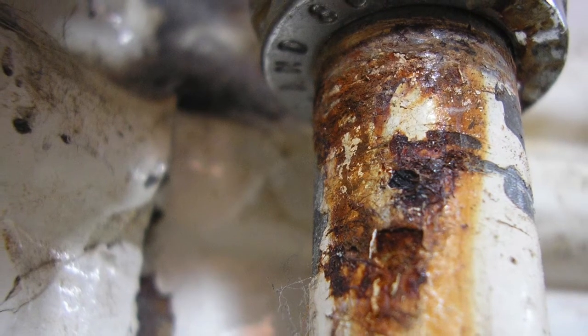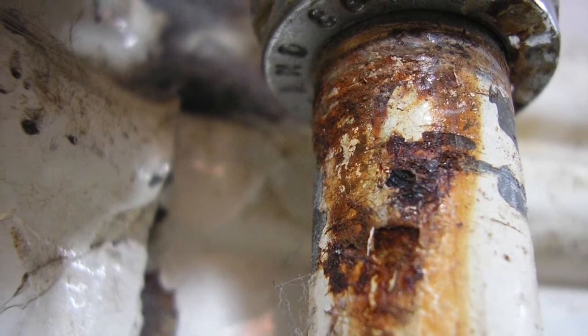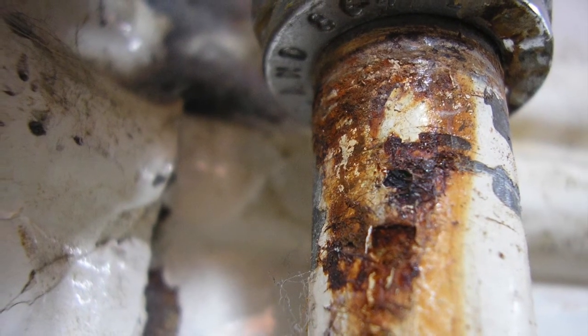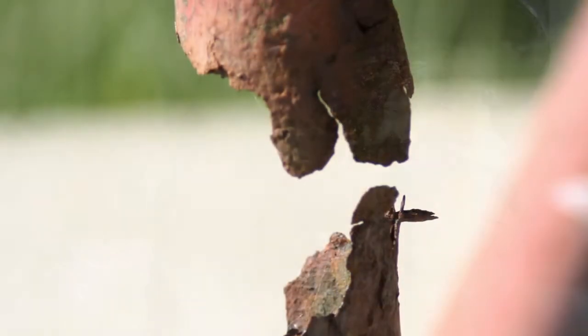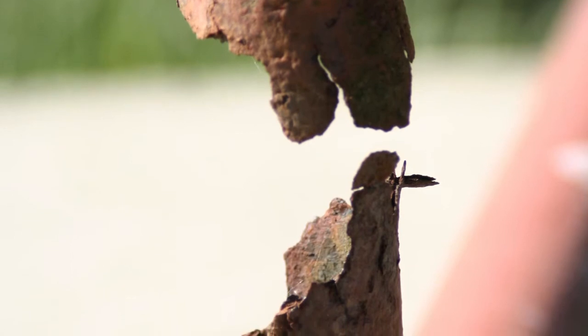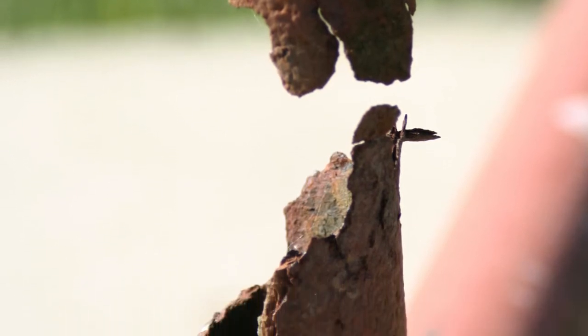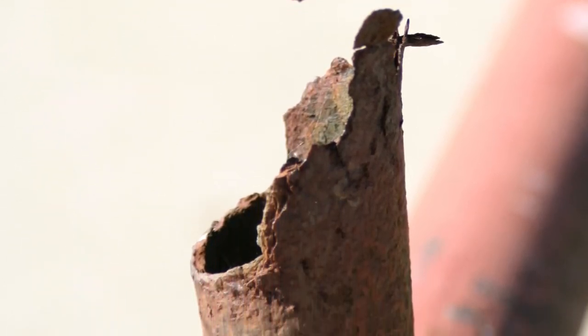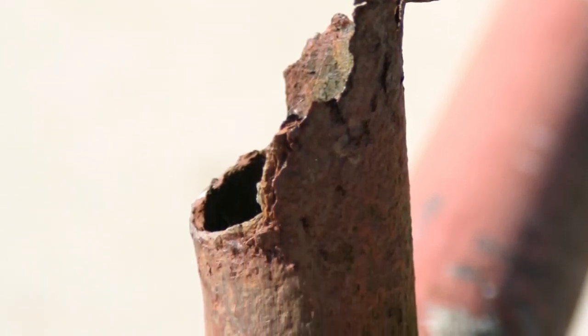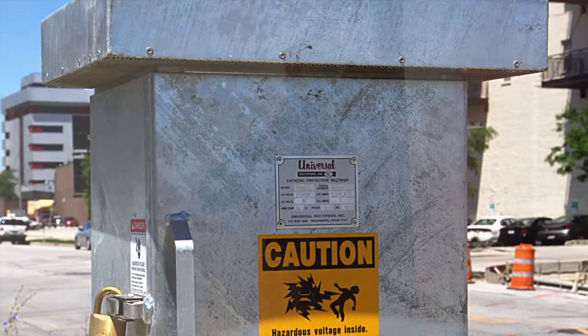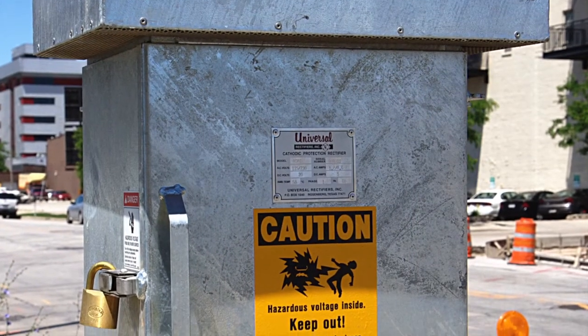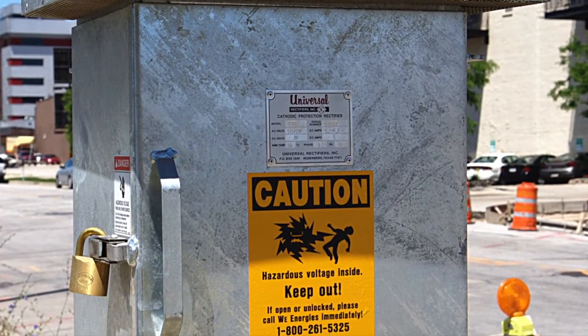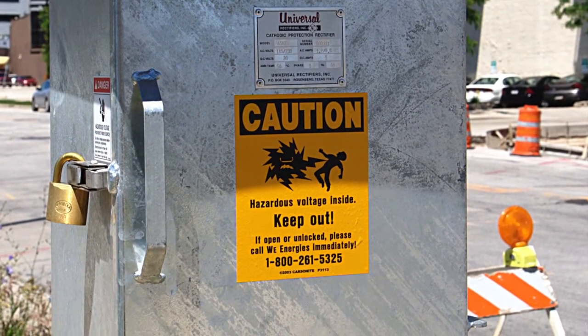In water treatment, corrosion can occur inside tanks, piping, pumps, motors, or anything that is made up of metal that comes in contact with water. With a better understanding of how corrosion is caused, what can be done to prevent it,